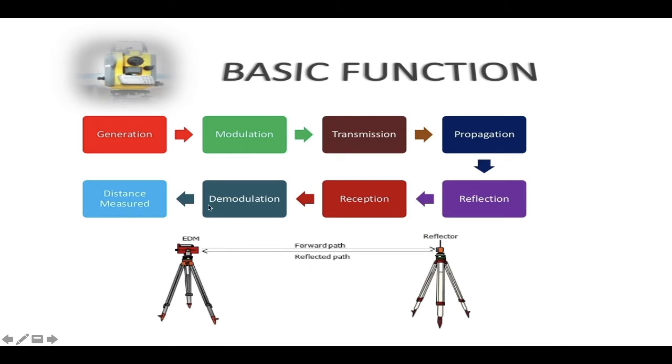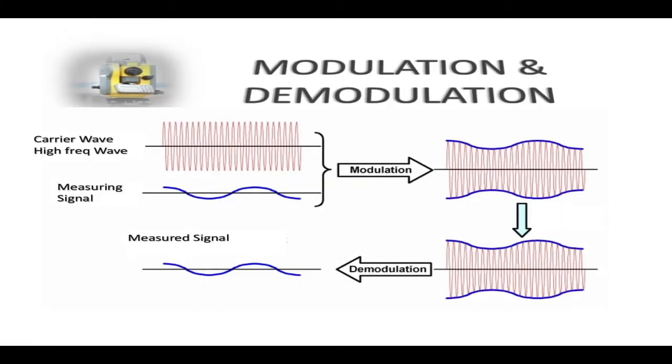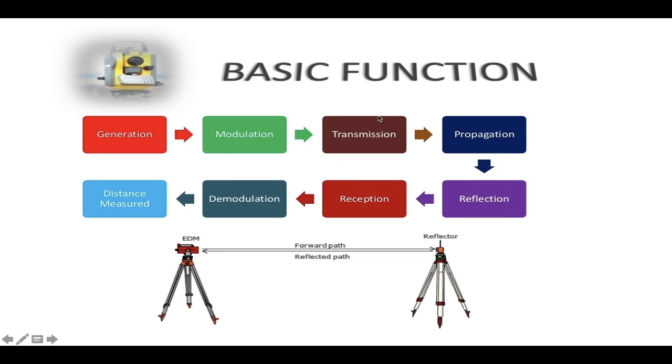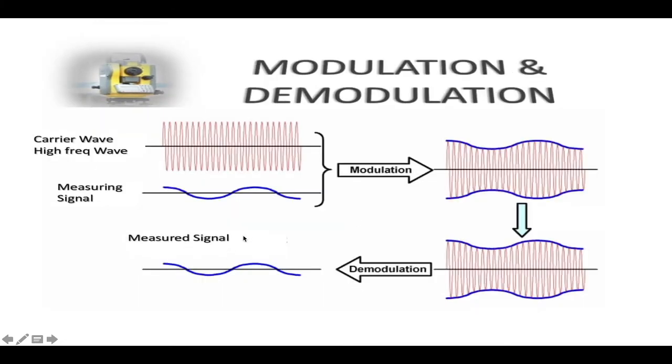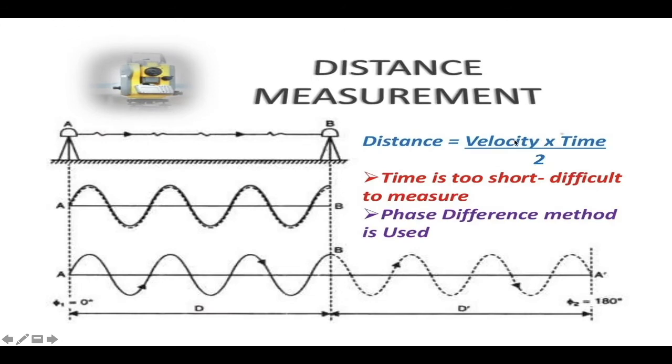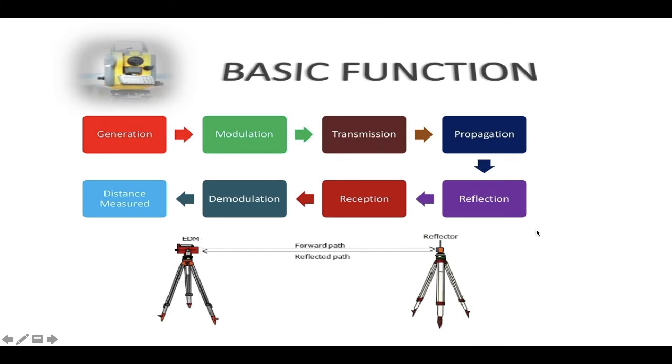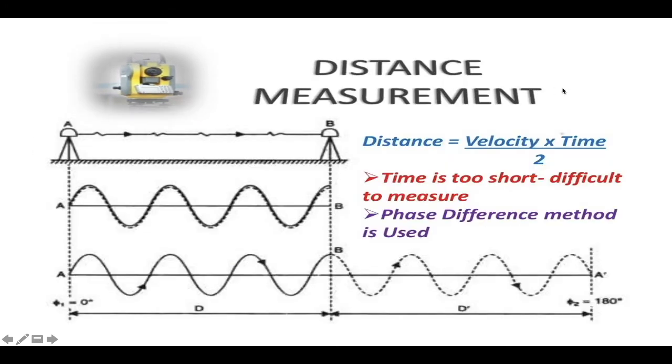The basic function is generation - generating the waves from the instrument - and then modulation takes place wherein carrier wave and measuring signals are modulated together. Next, transmission and propagation take place where wave movement to the reflector occurs, then reception takes place where waves are received, and then demodulation takes place wherein only measured signals are passed and the distance is measured. As we discussed, distance measured equals velocity times time, divided by two because here we have considered two paths - the forward path and the reflected path - but we need to calculate only one path.